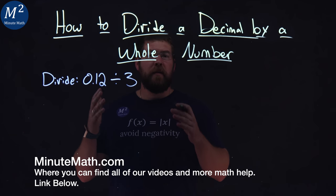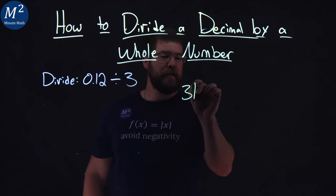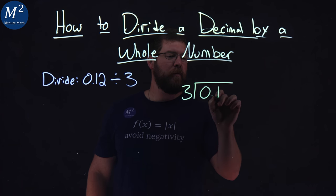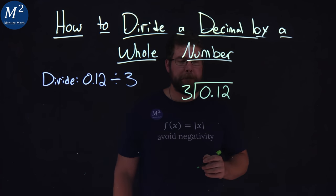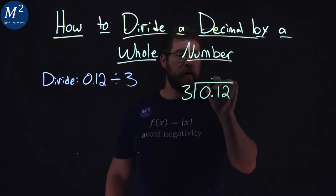Well, 0.12 divided by 3, we're going to use long division here. 3 goes into 0.12. All right, I'm going to keep in line this little decimal place as well up here.